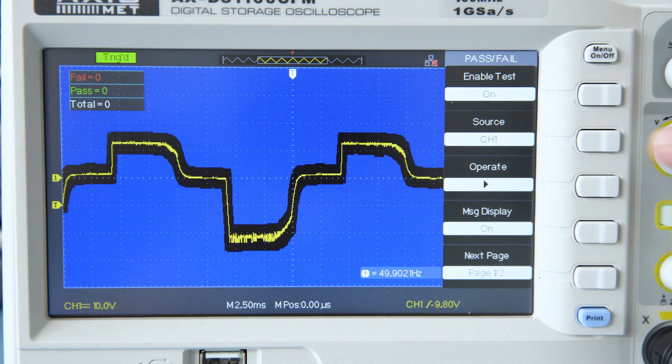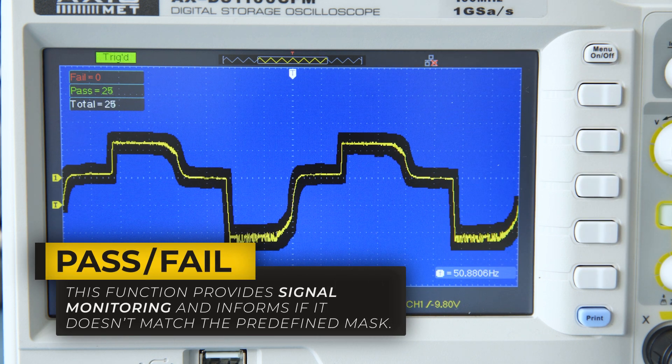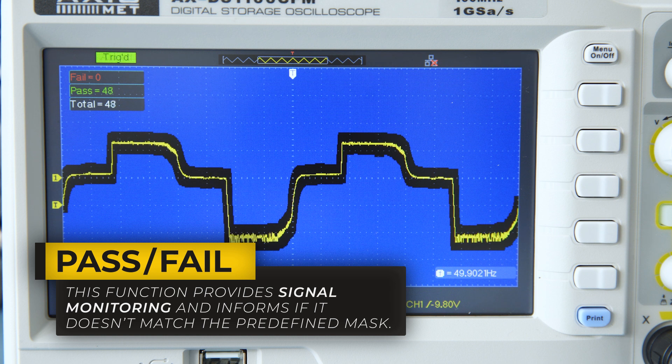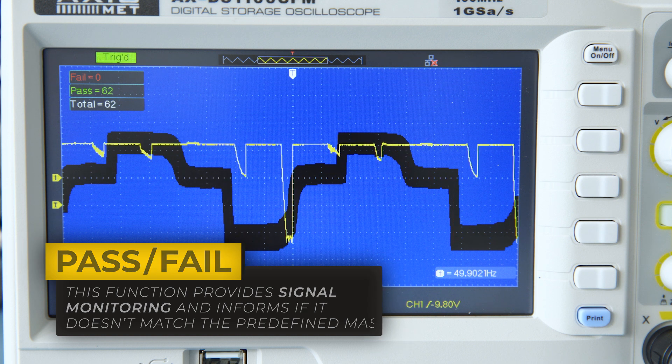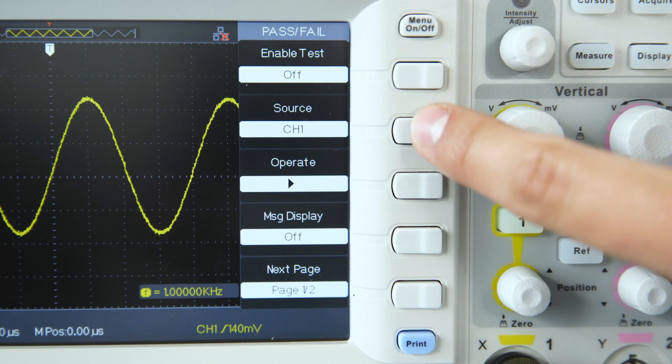Another very useful function of the Oscilloscope is the Pass-Fail test. In this function, the Oscilloscope monitors the signal and outputs a message if the signal does not match the predefined mask.